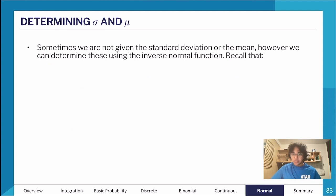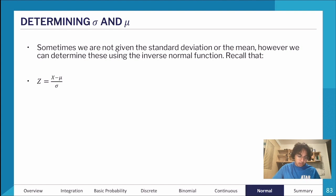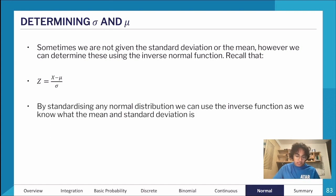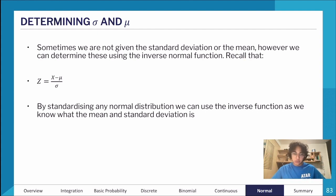In some cases we're not given the standard deviation or mean, but we can determine them using the inverse normal. Using Z = (X − μ) / σ, we can standardize any normal distribution back to the standard normal N(0,1), and then use the inverse normal function to work with it.